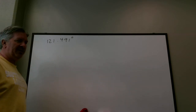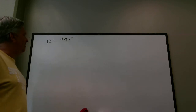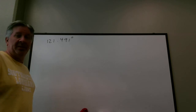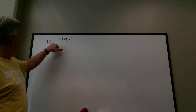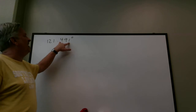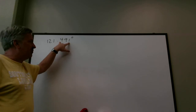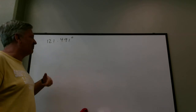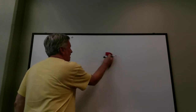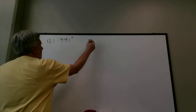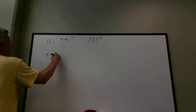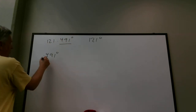The decimal part is 0.491, which is a little less than half a degree, so I'd expect my minutes to be a little less than 30. It's a good idea to get a sense of what your answer should look like before you even do the problem. My final answer will be 121 degrees something, so I focus on the 0.491 degrees.